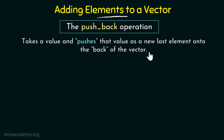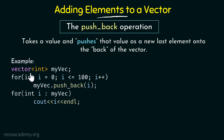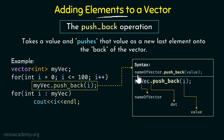Let us look at some examples. Here I have a piece of code where I declare a vector called myvec of type integer, and I run a for loop with index i from 0 to 100. Inside the loop we use myvec.push_back(i). The syntax is: the name of the vector, followed by a dot, then push_back — written as push underscore back — and within parentheses we specify the value to be pushed into the vector.